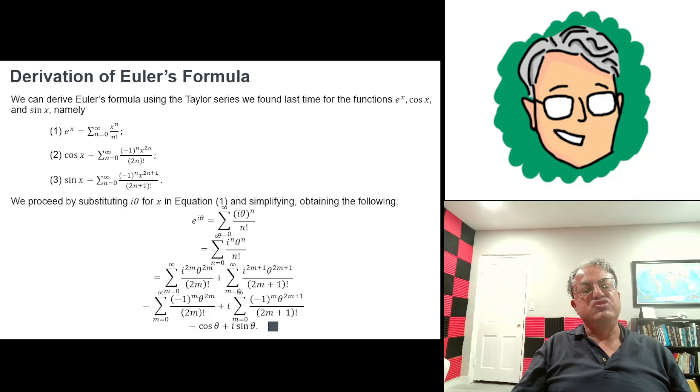We can break this up into two parts. When n is even, we can write n as 2m. So the even terms look like i to the 2m times θ to the 2m over 2m factorial. And the odd terms are i to the 2m plus 1 times θ to the 2m plus 1 all over 2m plus 1 factorial.